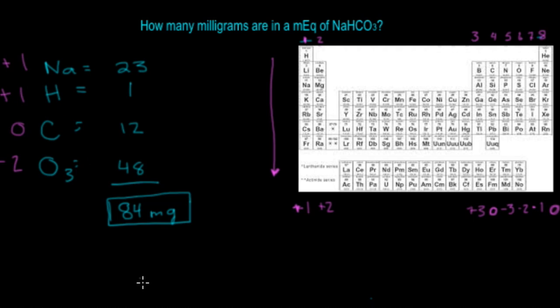You're going to do 84 milligrams divided by 1. When you do 84 divided by 1, that gives you 84 milligrams. So the answer to how many milligrams are in a milliequivalent of NaHCO3 is 84 milligrams in 1 mEq of NaHCO3.